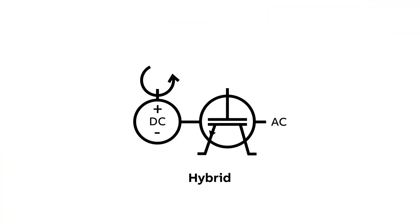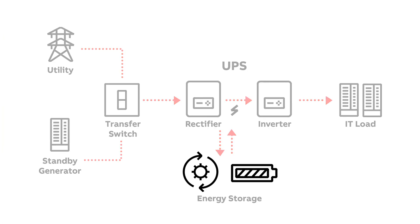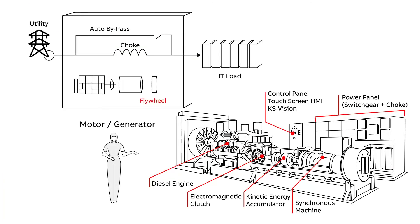Hybrid UPS are similar to static systems but use both flywheels and batteries. Here, flywheels are connected to a motor generator block that supports their rotation. This provides bridging time until the diesel generator starts and powers the inverter with DC.